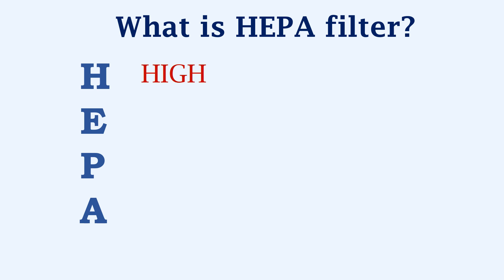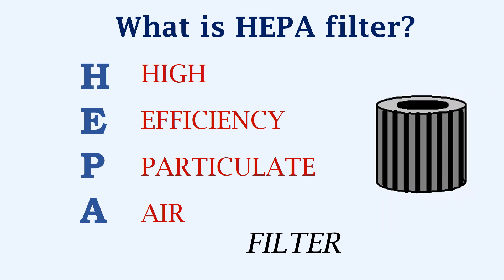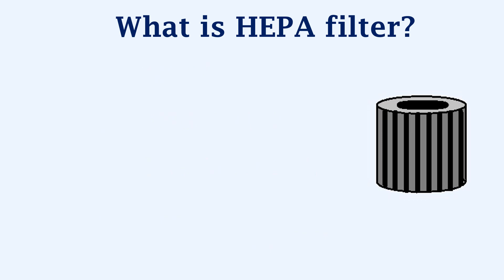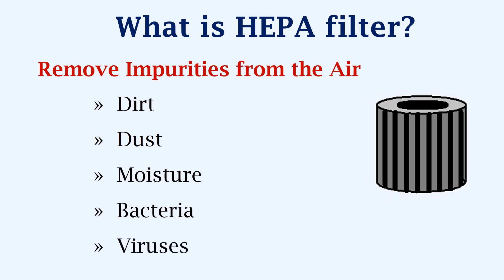The HEPA filter stands for High Efficiency Particulate Air Filter, which is fitted in most commercial aircraft. The HEPA filter is used to remove impurities from the air. These impurities include dirt, dust, moisture, bacteria, and viruses. The filters are designed such that they are able to remove 99.9% of the impurities from the incoming air.